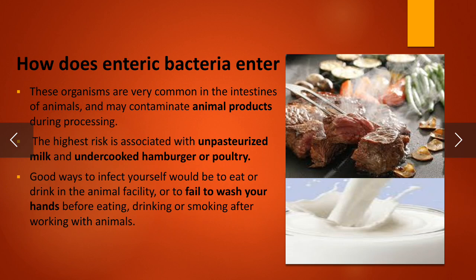These organisms are very common in the intestine of animals and may contaminate animal products during processing. The highest risk is associated with unpasteurized milk, undercooked poultry products, and undercooked foods such as burgers and kebabs.